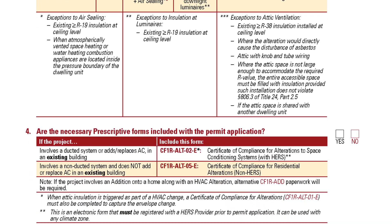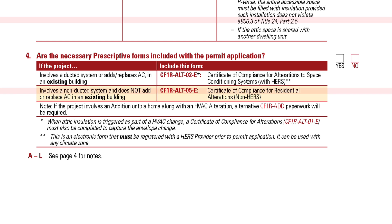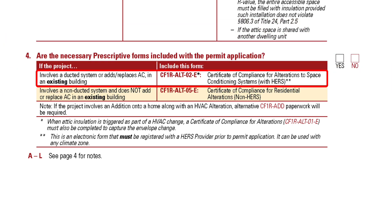The final question to ask in evaluating the permit application is whether all required energy compliance forms were submitted. Part 4 of the checklist page can help with this. Let's say the homeowner didn't submit any energy code forms — what's missing? The table in Part 4 has the required forms by project scenario. In this case, the project involves a ducted system and replaces AC in an existing building, so this project will require submission of compliance form CF1R-Alt-02E.